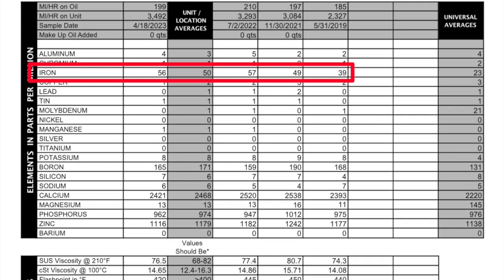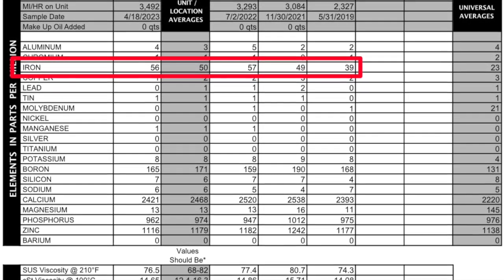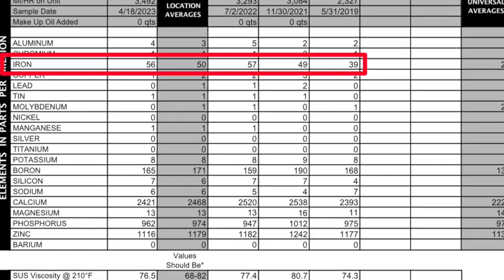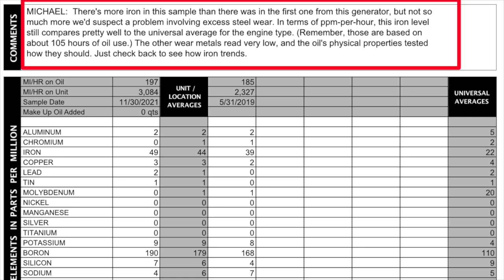I want to switch gears and talk about the Blackstone Laboratories comments and how much I value them, because in situations like this, when I see rising iron levels, I'm concerned. On my November 30th report — the second oil analysis I received — they said: 'Michael, there's more iron in the sample than there was in the first one from the generator, but not so much that we'd suspect a problem involving excess steel wear. In terms of parts per million per hour, this iron level still compares pretty well to the universal averages for the engine type, based on about 105 hours of oil use. The other wear metals read very low and the oil's physical properties tested how they should. Just check back to see how the iron trends.' That helped calm me down a little bit.